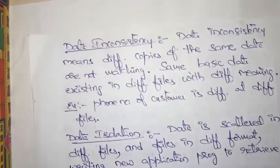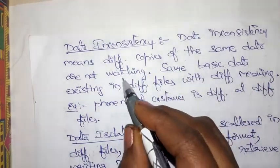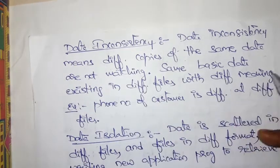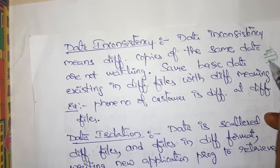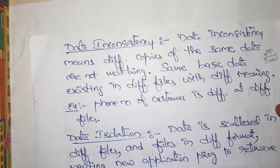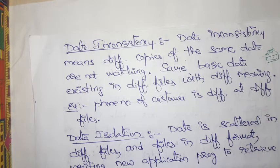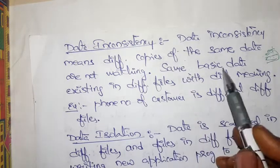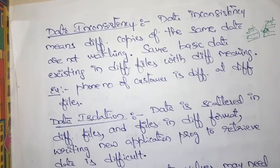The next drawback is data inconsistency. Data inconsistency means different copies of the same data are not matching. For example, an employee's phone number in one file is different from the same employee's phone number in another file. Different copies of the same data existing in different files with different values — that is data inconsistency.